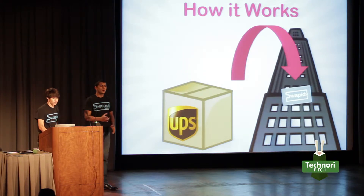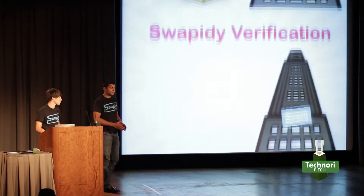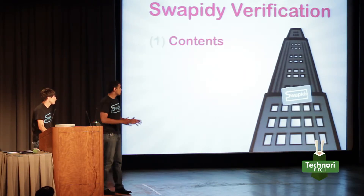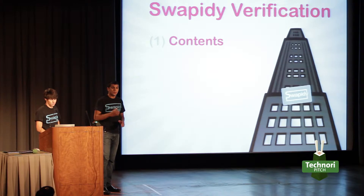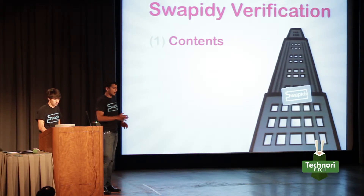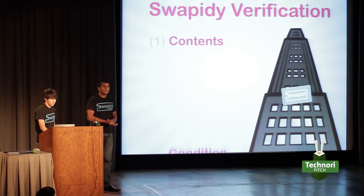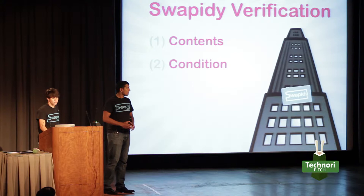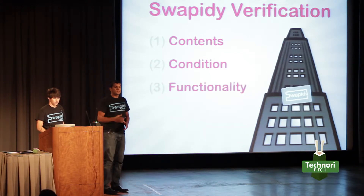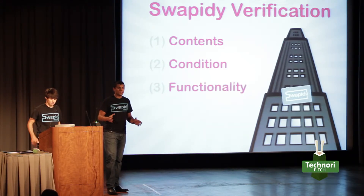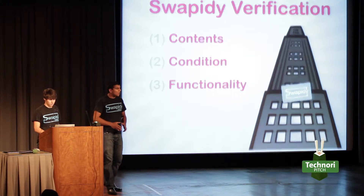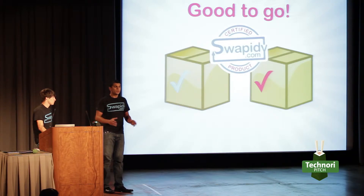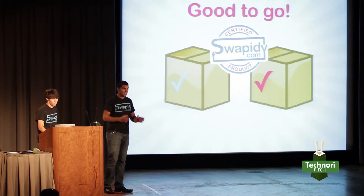We're the only marketplace that does verification of the products. Once it comes to our location, we do three things. We check for the contents, so we make sure that all the things included in the listing are actually in the box. The second thing we check for is the condition — is it the actual condition that was described? And the third thing we check for is the functionality — does it actually do what it's intended to do? Once the items are good to go, we give it our Swappity seal of approval, and off it goes to each of its respective parties. And that's it. You're done.